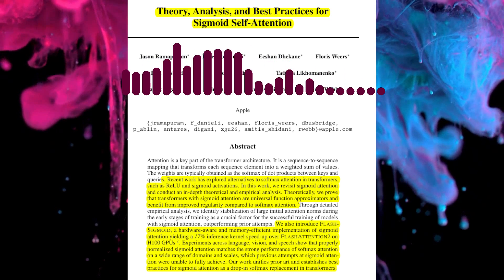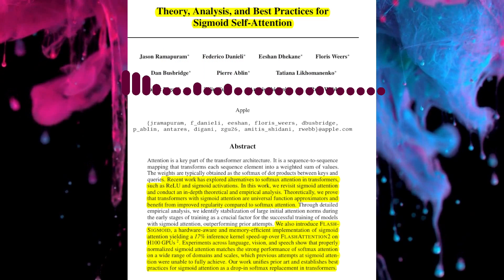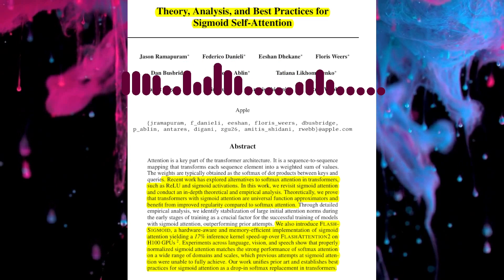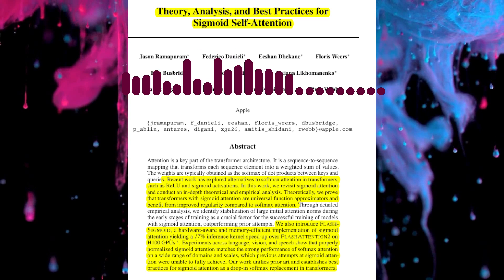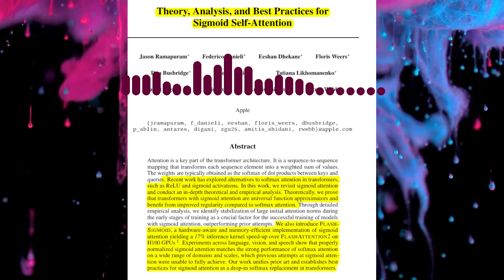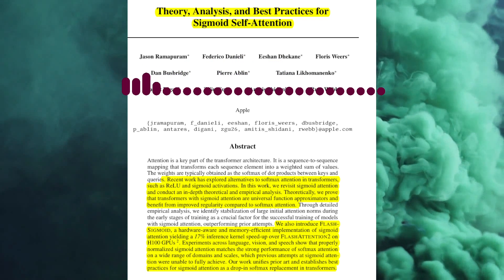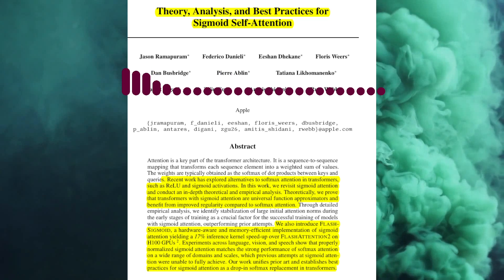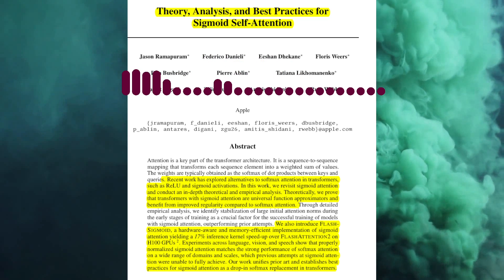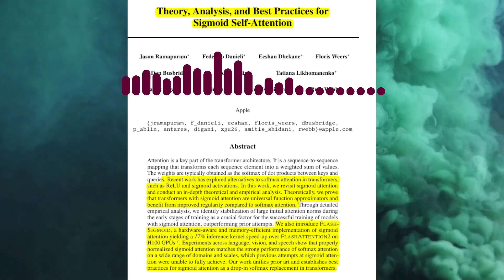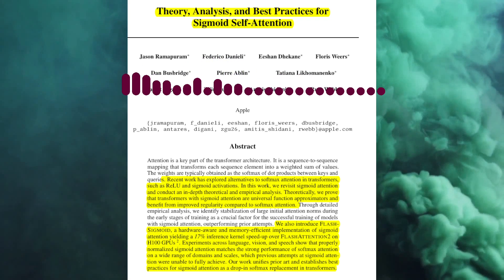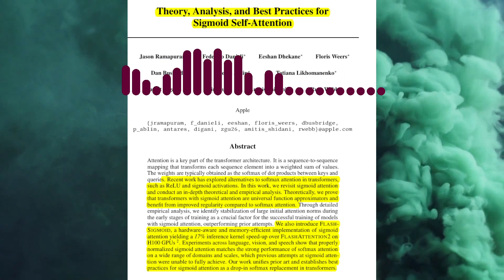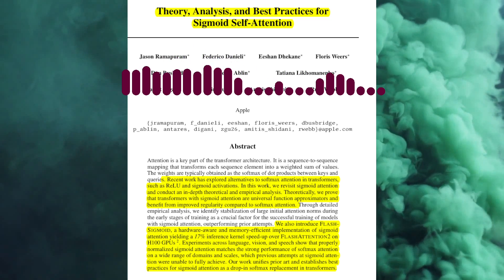The paper also mentions some limitations of sigmoid attention. The authors acknowledge that in large-scale language modeling, they observe some gradient norm spikes and a slight performance gap compared to softmax attention. They also note that the theoretical bounds they derive for sigmoid attention might not be maximally tight and could be further refined. Finally, they emphasize that the performance of sigmoid attention on niche or emerging applications remains to be validated, and further research is needed to address these limitations and fully explore its potential.